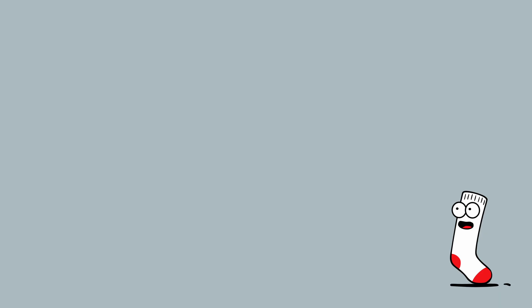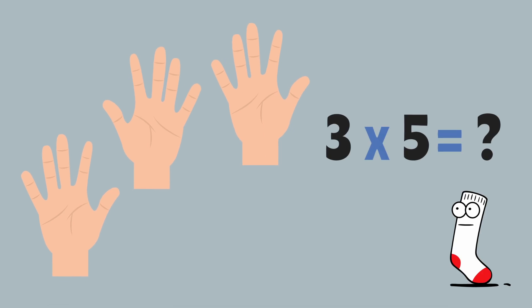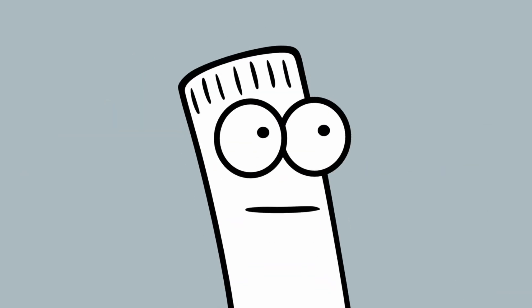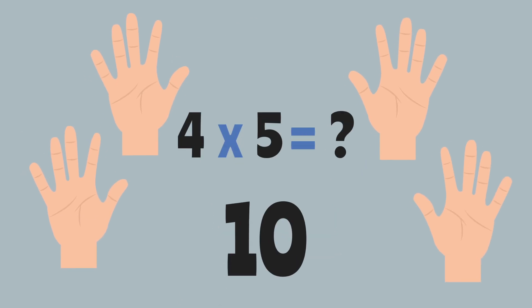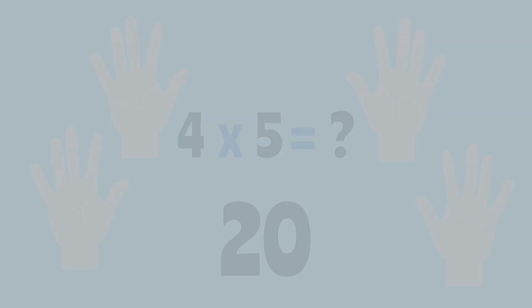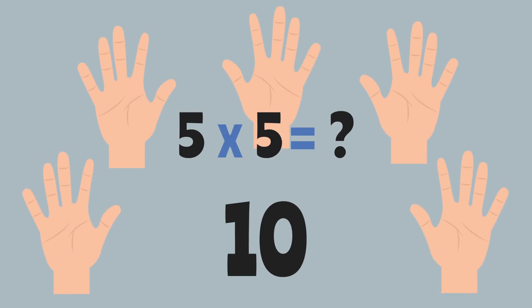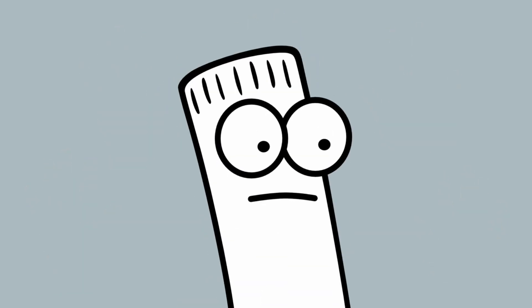Let's put groups of five together. We'll use our hands — high five! Each hand is a group of five fingers. Three hands — let's count by fives: five, ten, fifteen. Four hands — five, ten, fifteen, twenty. Five hands — that's five times five: five, ten, fifteen, twenty, twenty-five. Nice and easy. You're getting the hang of it!